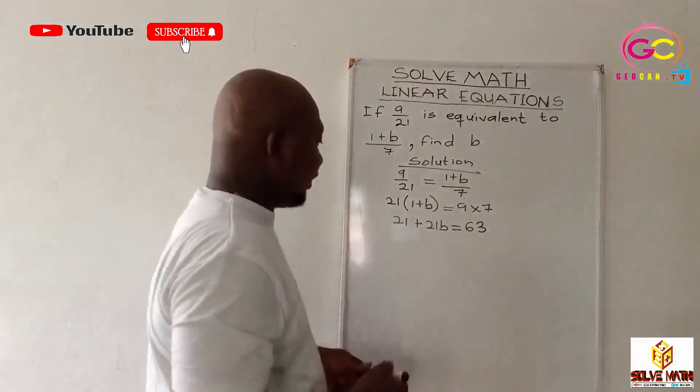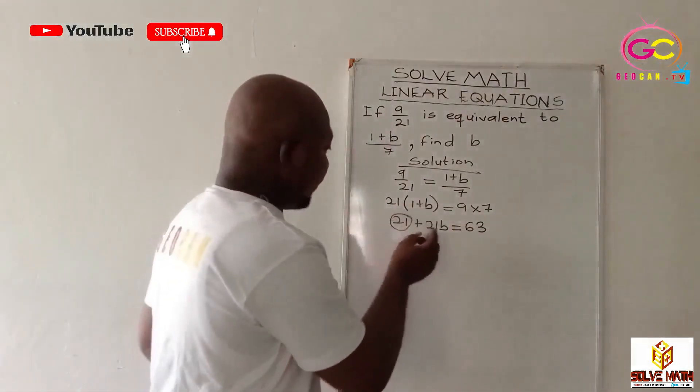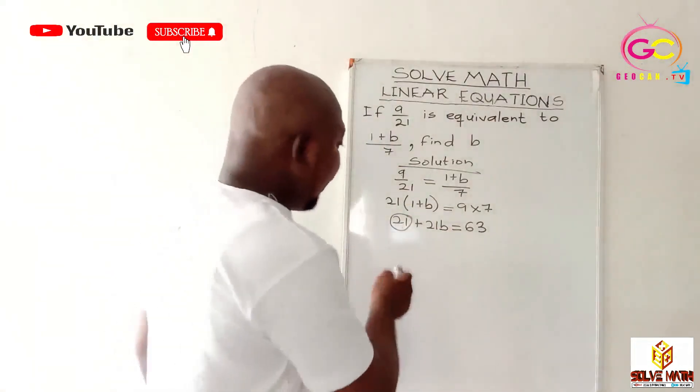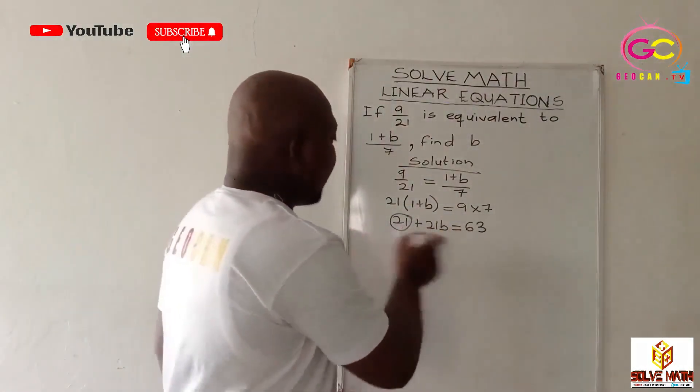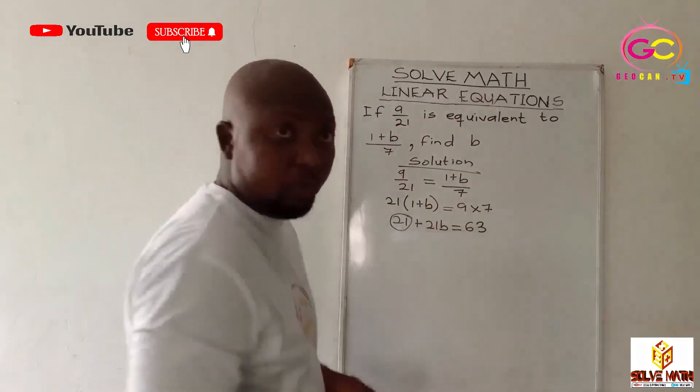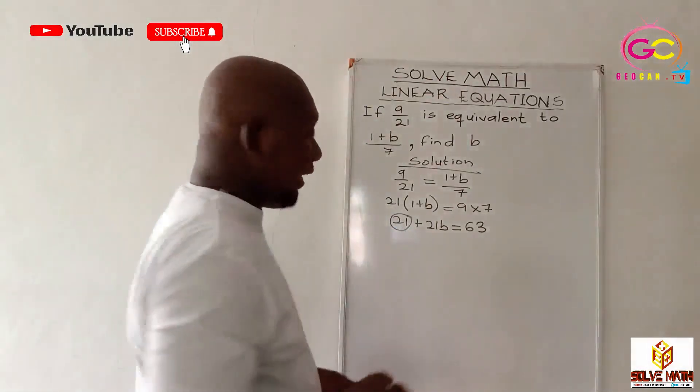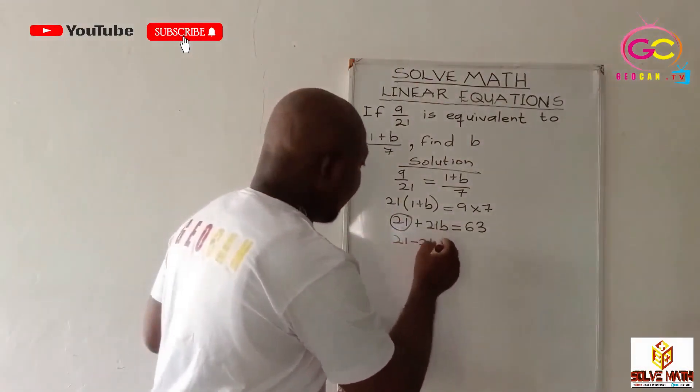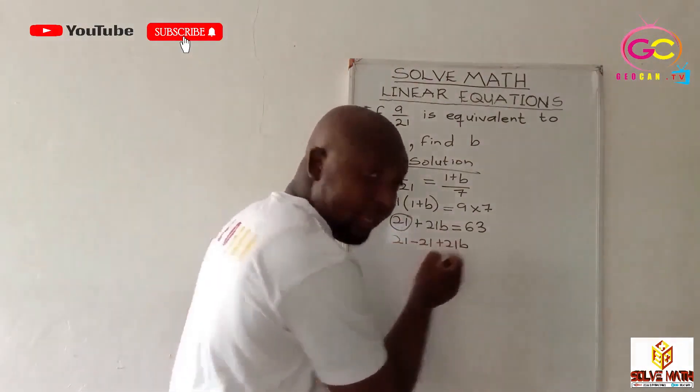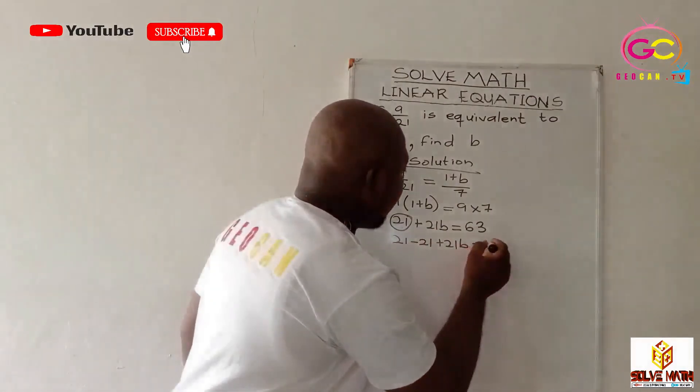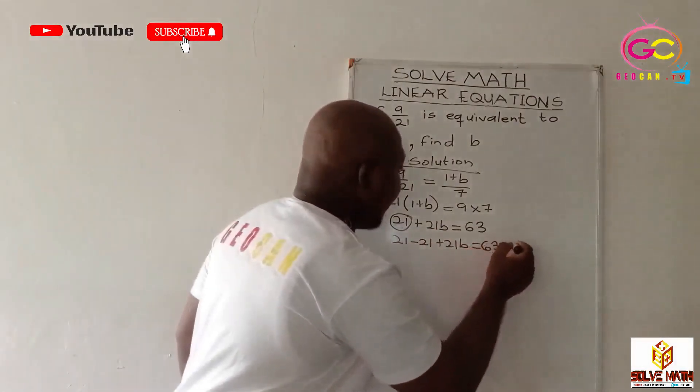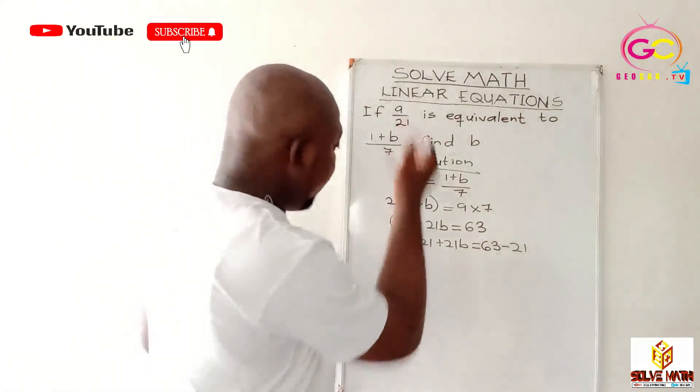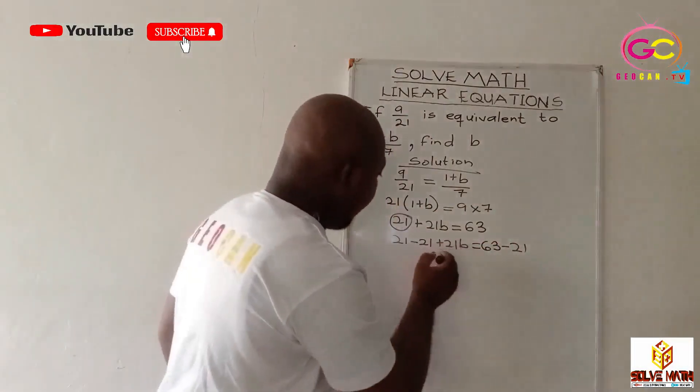Now, what is the next step? What do we have closer to 21B? We have 21, a positive. So what it means is that you have to subtract 21 from both sides of the equation in order to eliminate this 21. So we have 21 minus 21. Then you have your plus 21B. I hope you are following. It's equal to 63 minus 21. Good. 21 minus 21 is 0. So it's gone.